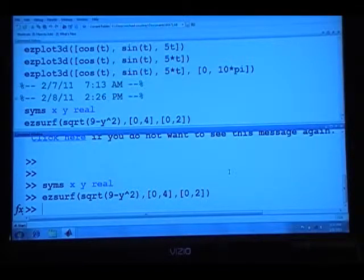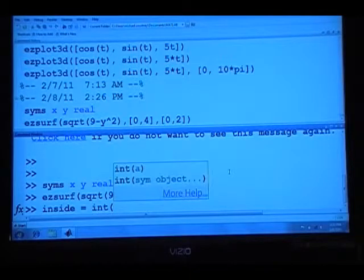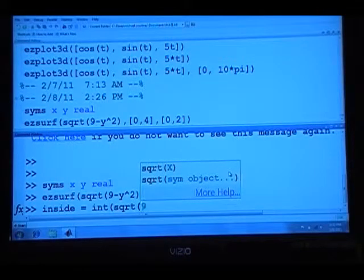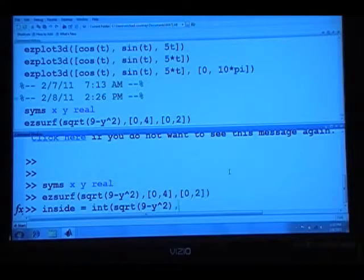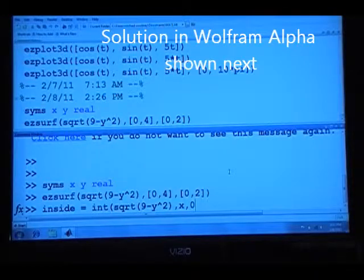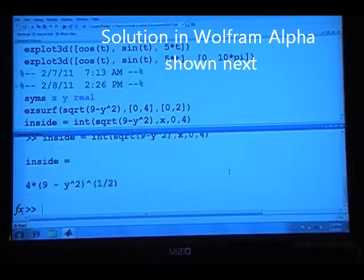Let's integrate over x first. So let's make the inside integral equal to int. And that's the MATLAB command for integration. And the function is the square root of 9 minus y squared. And we want to integrate over x first. And we go from x equals 0 to 4. Alright, so that's the results of the inside integral.